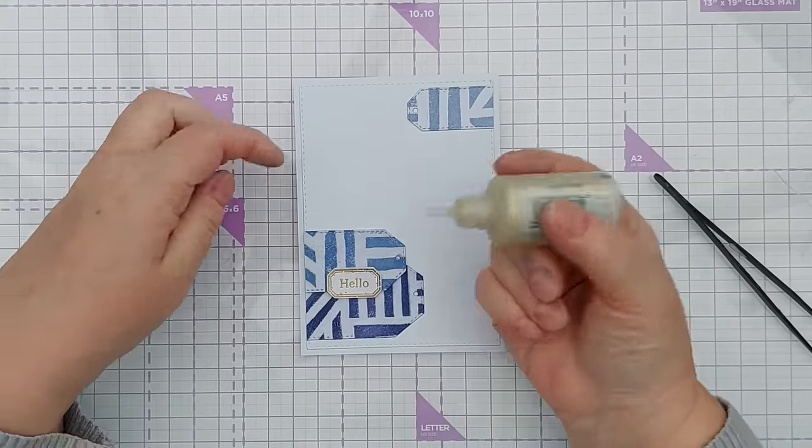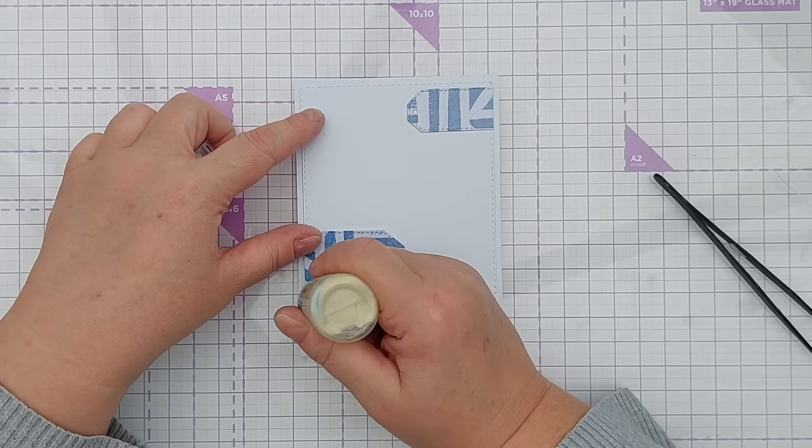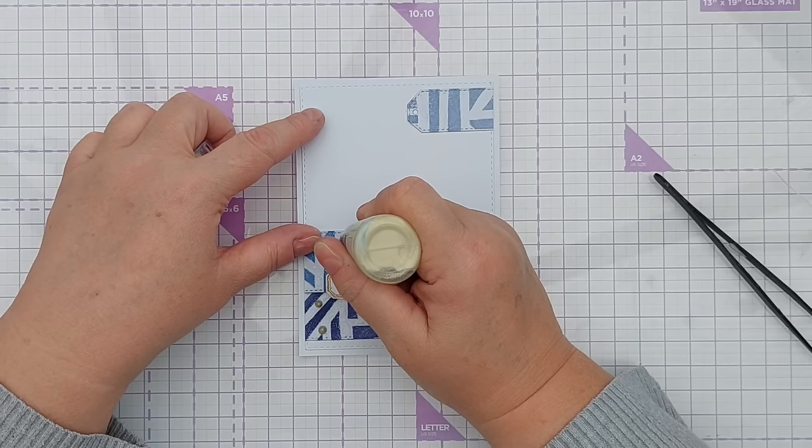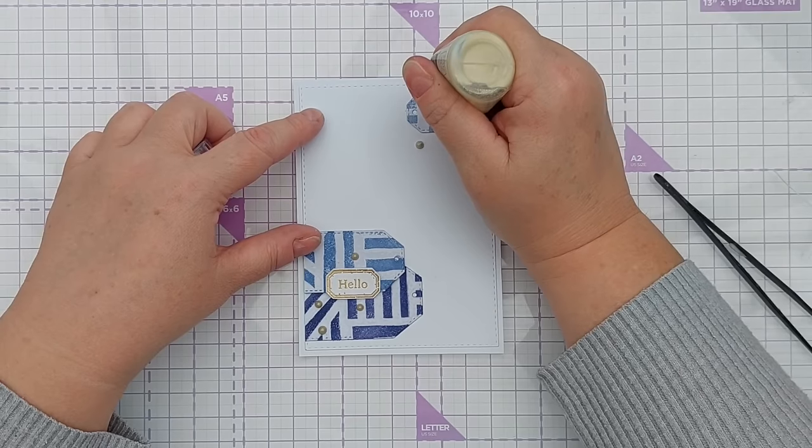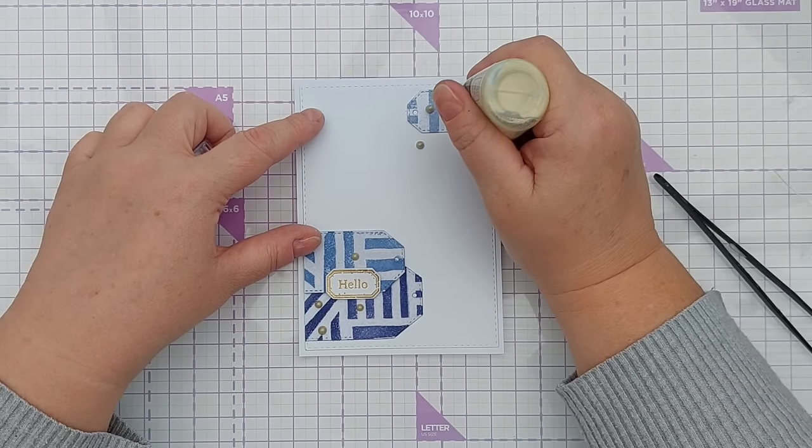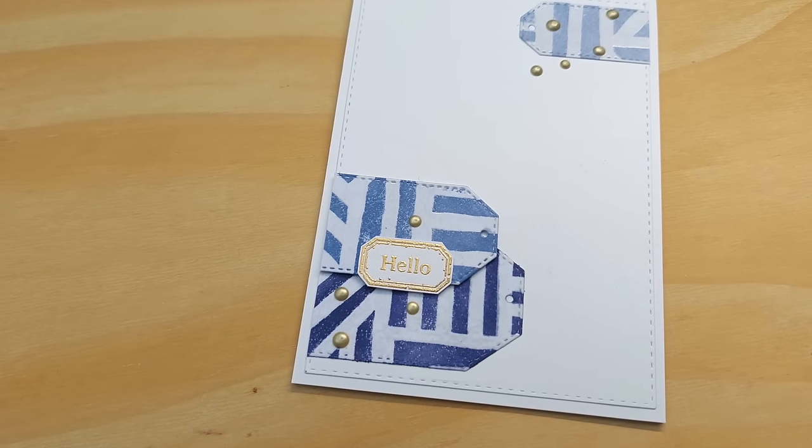And you know what's coming next. Some gold Nouveau drops to link it all together, to add that gloss, dimension, bling, sense of movement and flow, to reinforce that diagonal design. And there's card number seven. Very simple. Very clean.